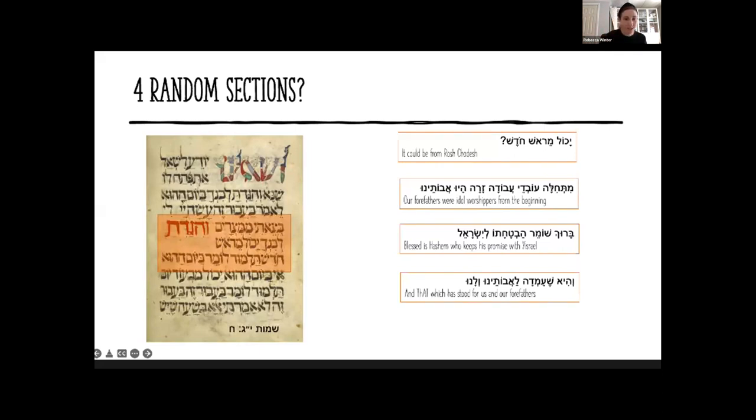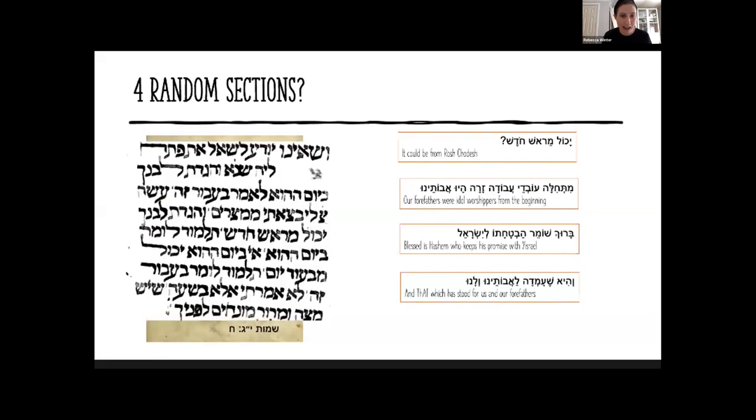You can see that over here where they have this big paragraph, but it's really part of the same paragraph. This is the Golden Haggadah, I think from 1320, a Sephardic Haggadah. You can see that this section of Yachol Mirosh Chodesh is actually continuing from the section of Sheinu Yodeh Elisha.